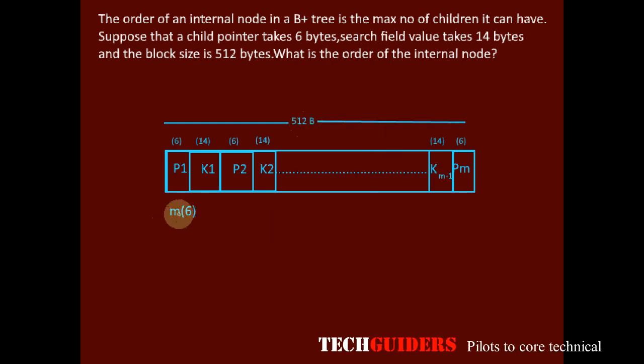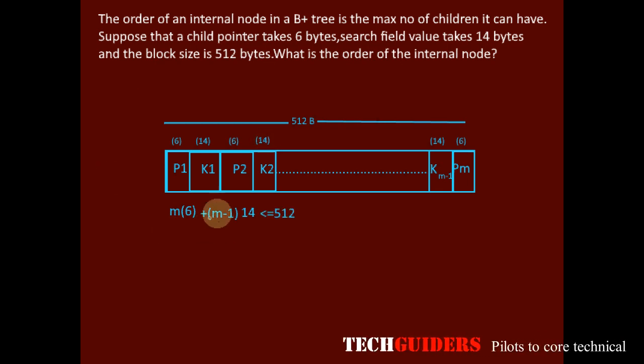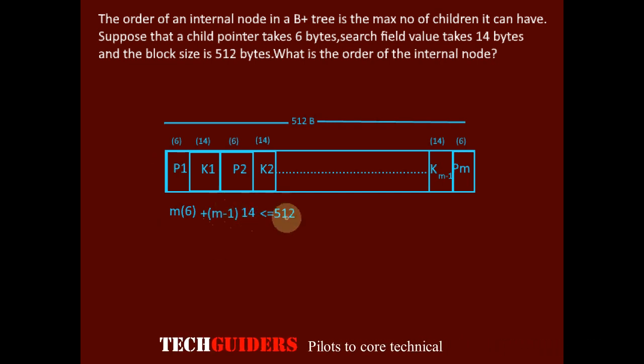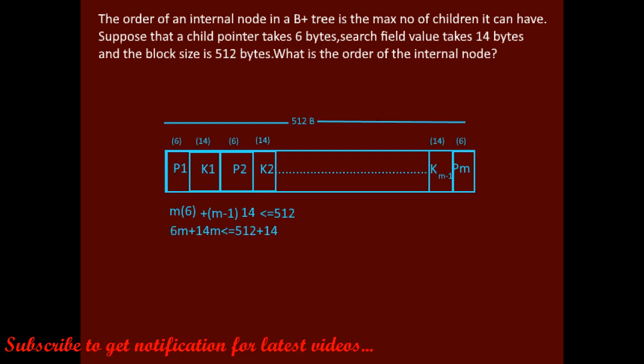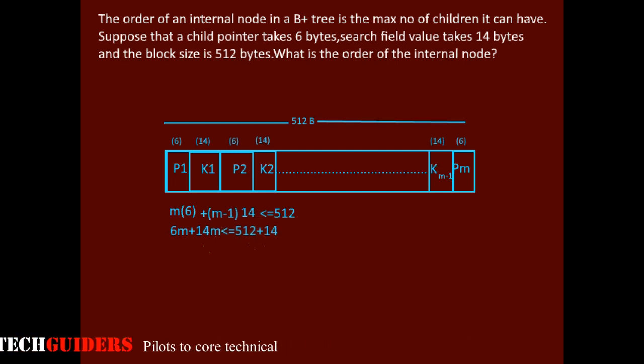Hence, maximum there will be m pointers each of size 6 bytes plus m-1 keys each of size 14 bytes. Together it should occupy a block or a node of size 512 bytes. Thus the total size should not exceed 512 bytes, which implies 6m + 14(m-1) should be less than or equal to 512, which implies 6m + 14m should be less than or equal to 512 + 14.